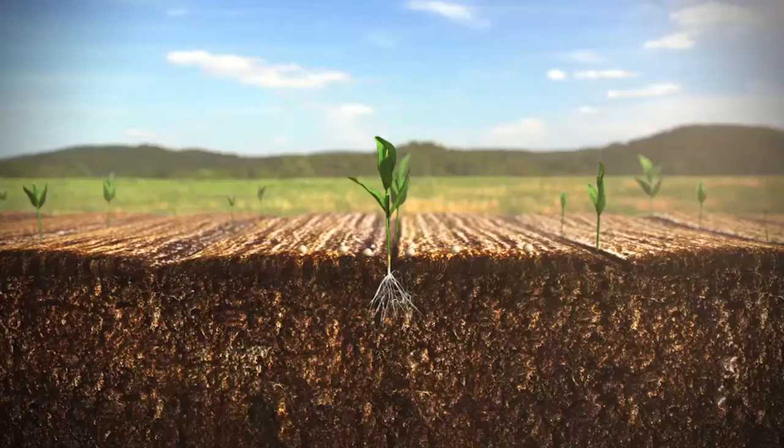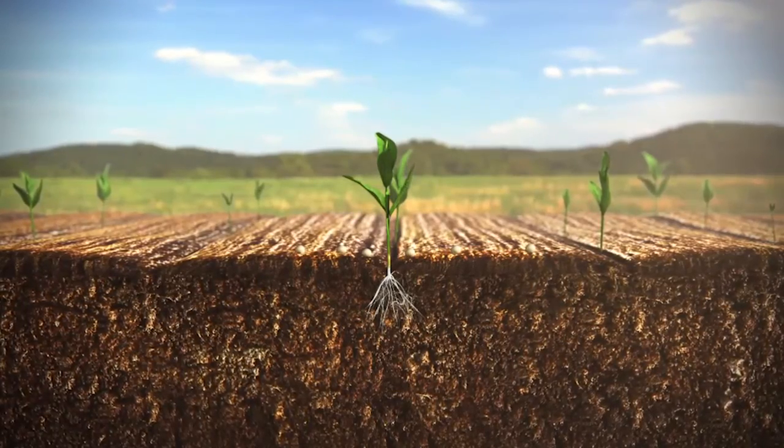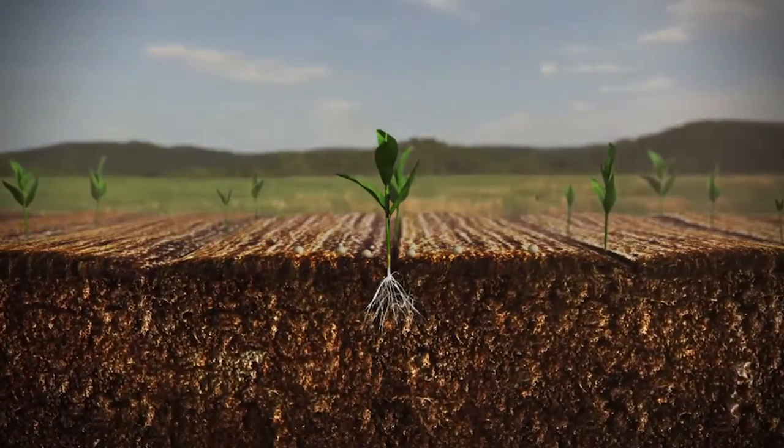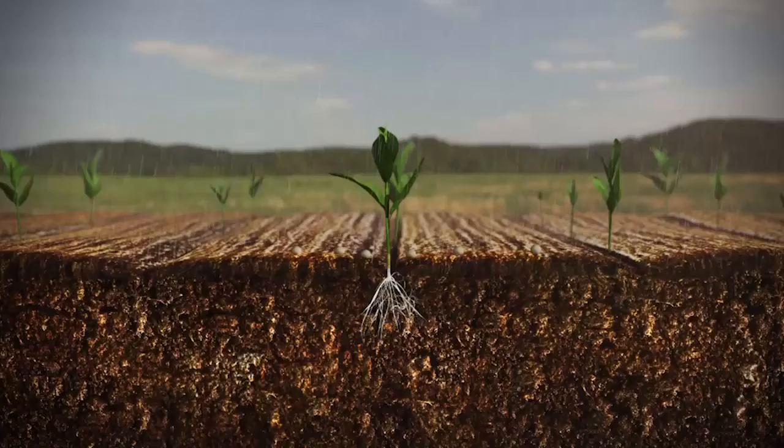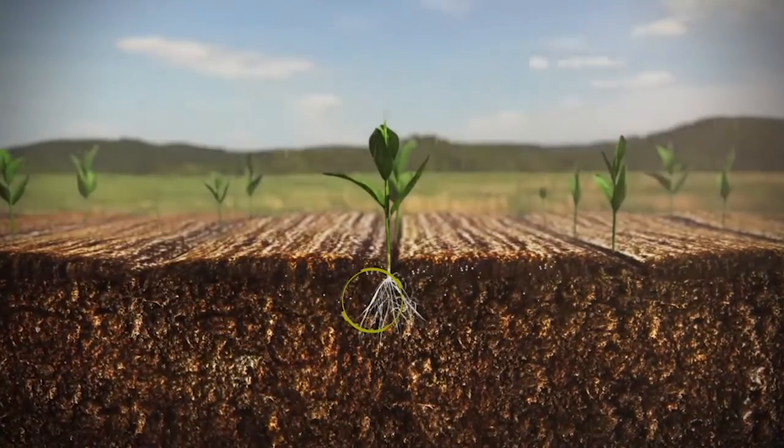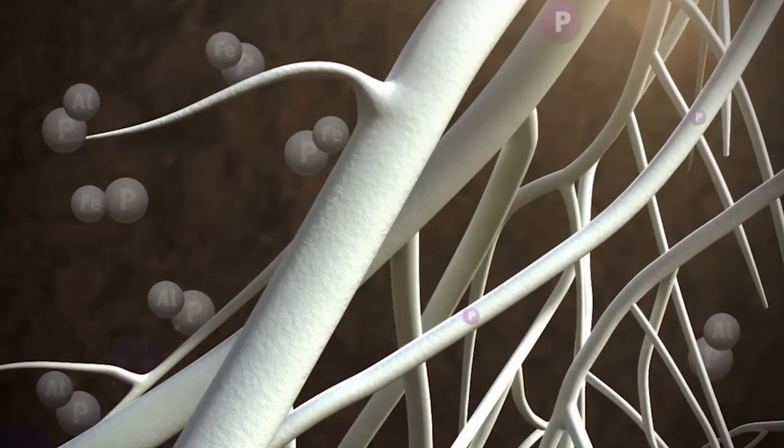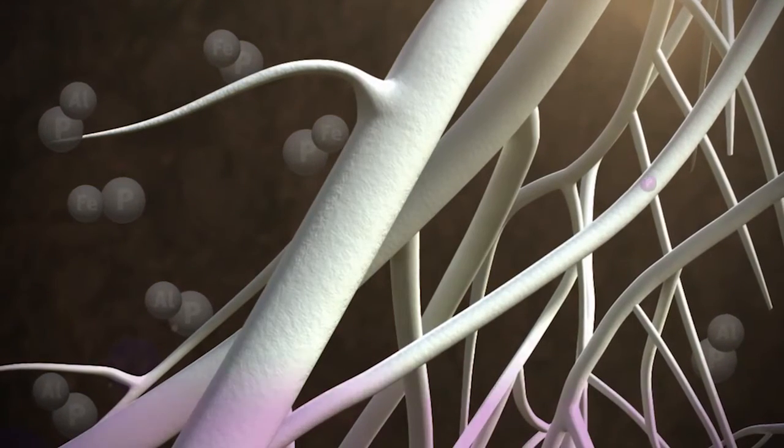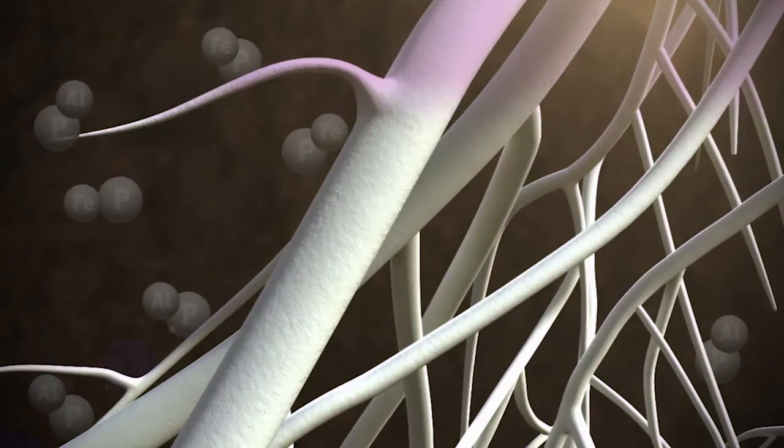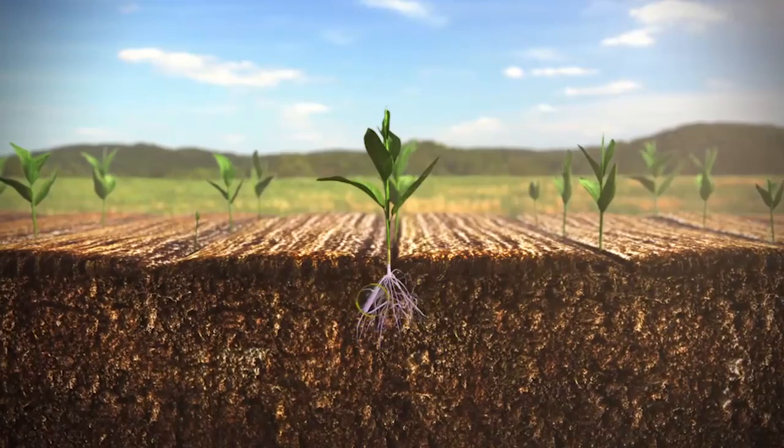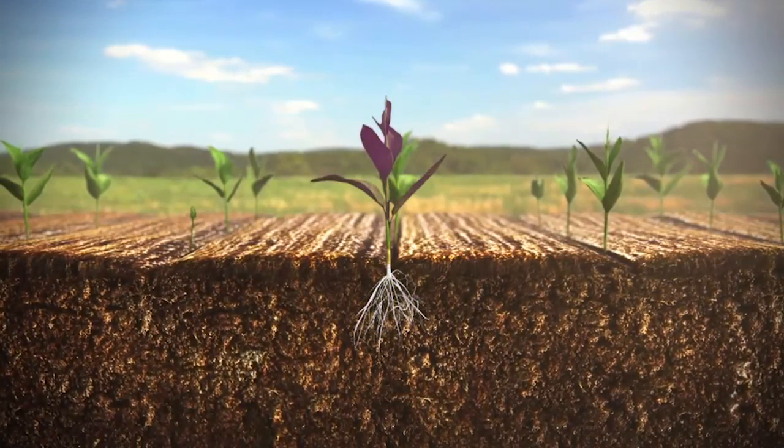In acidic soils, for instance, we have the presence of iron and aluminium and also clays in the soil that can react with phosphate, forming iron phosphate, aluminium phosphate, or the absorption of phosphate in clays. And in this way, we have a decrease in the availability of phosphate for plants.